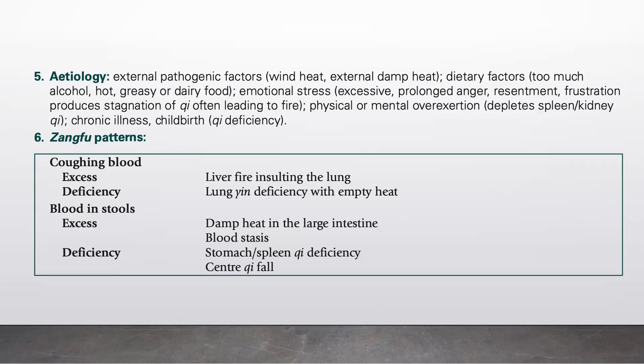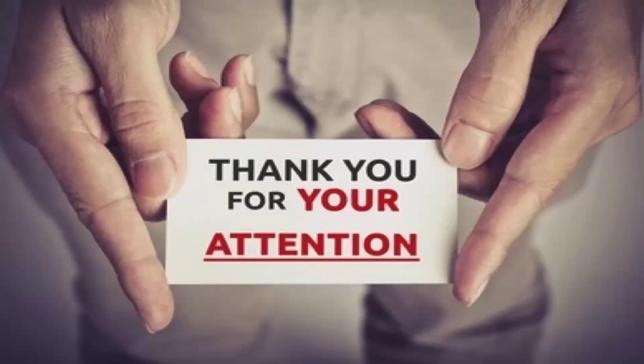Finally, the Zangfu organ patterns: if coughing blood is an excess condition, it indicates liver fire insulting the lung; if deficiency, it indicates lung yin deficiency with empty heat. For blood in stools, if excess it could be damp heat in the large intestine or blood stasis; if deficiency, it indicates stomach-spleen qi deficiency or sinking center qi.